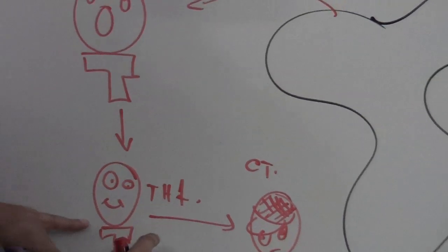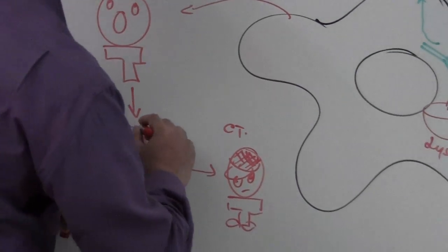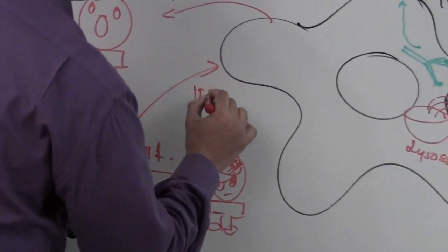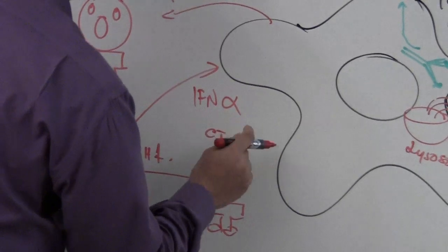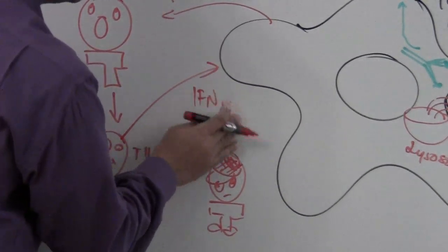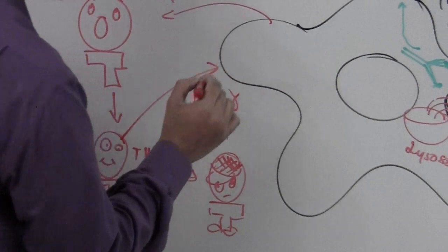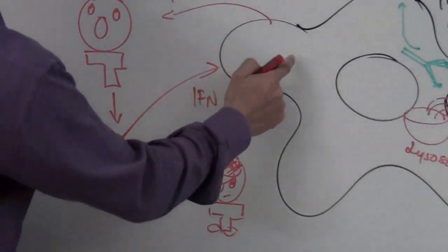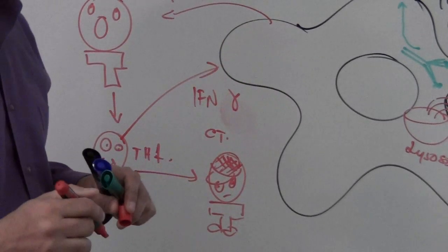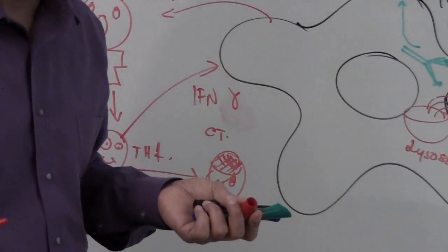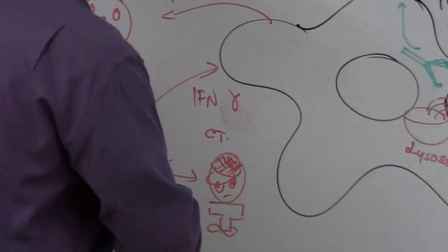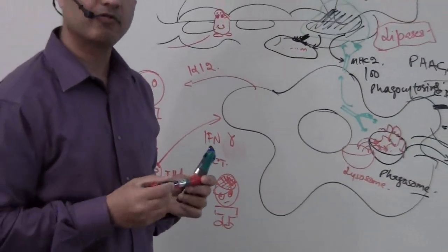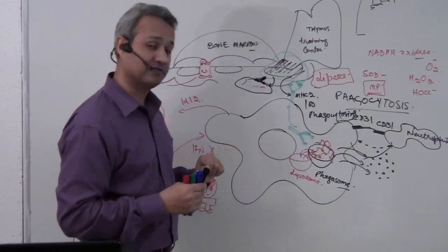But remember that when the T helper cell was formed, that cell was sending gamma interferons back, interferon gamma. Why do I always write it as alpha? I have a dyslexia of some sort. So gamma interferon. So that gamma interferon, which goes back and acts on the macrophage. So of course, macrophage has to have a receptor on it for the gamma interferon. Once the gamma interferon comes back and acts on the macrophage, that is when the macrophage becomes active.